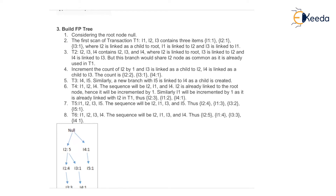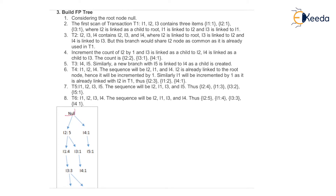Consider the root node as null. The first scan is transaction T1 with I1, I2, and I3, containing three items: I1 count 1, I2 count 1, and I3 count 1. I2 is linked as a child to the root, I1 is linked to I2, and I3 is linked to I1.